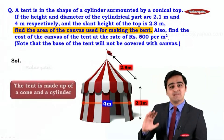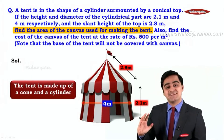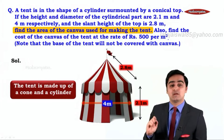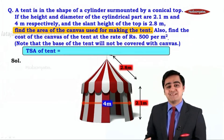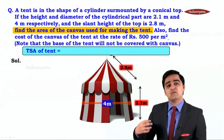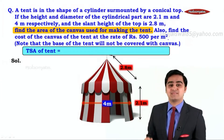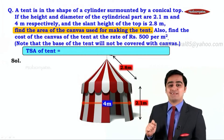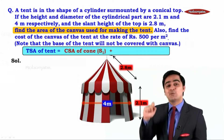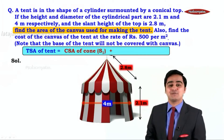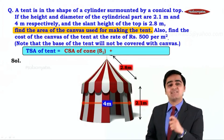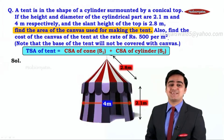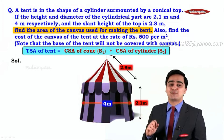The entire tent is made up of a cylinder and a cone. Total surface area means the sum of the areas of those surfaces which are visible from outside. So we can say the total surface area of the tent is equal to the curved surface area of the cone, which we denote as S1, plus the curved surface area of the cylinder, which we denote as S2.